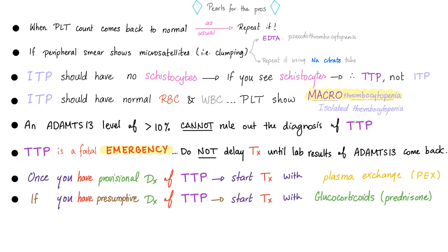An ADAMTS13 level of more than 10% cannot and should never rule out the diagnosis of TTP. TTP is a fatal emergency — do not delay treatment until the ADAMTS13 results come back. Once you have a provisional diagnosis — strong suspicion based on microangiopathic hemolytic anemia, thrombocytopenia, and maybe acute renal failure and fever — start treatment with plasma exchange immediately. If you only have a presumptive diagnosis — less certain than provisional, just microangiopathic hemolytic anemia and thrombocytopenia — start with glucocorticoids until you are more sure.